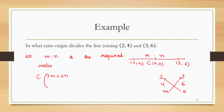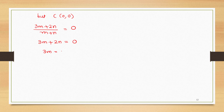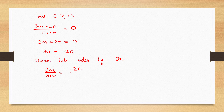Using the internal section formula with points and ratio m:n, the x-coordinate of C will be (3m+2n)/(m+n) and y-coordinate will be (6m+4n)/(m+n). But we are given that point C is the origin (0,0). So (3m+2n)/(m+n) = 0, which gives 3m+2n = 0, so 3m = -2n. Dividing both sides by 3n, we get m/n = -2/3, or m:n = -2:3. So the required ratio is -2:3.